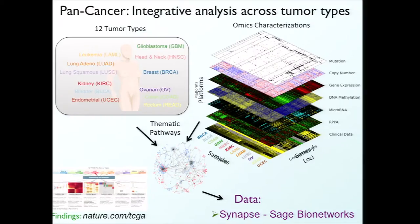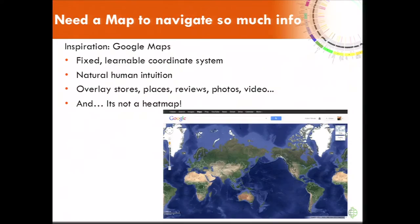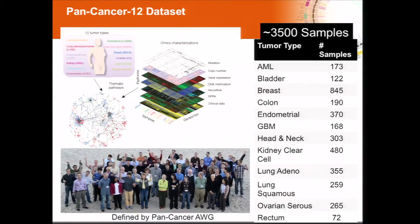I don't need to say much about where the data came from, but the pan-cancer analysis obviously we stood on the shoulders of that work. A lot went into that, and this dataset that we used was also coordinated by the same group. We're talking about 3,500 samples that we're going to try to place into molecular classifications across tumor types potentially, and ask the question: when we use these multiple different datasets, how do the tumors fall out?